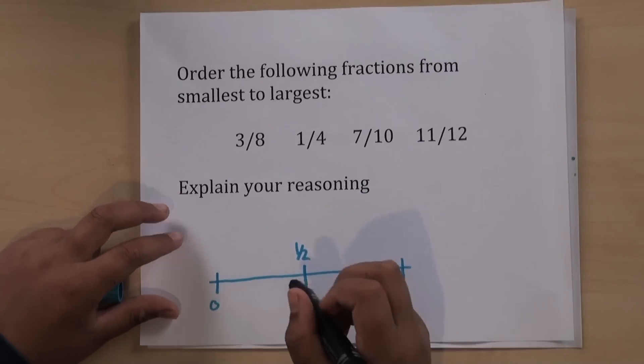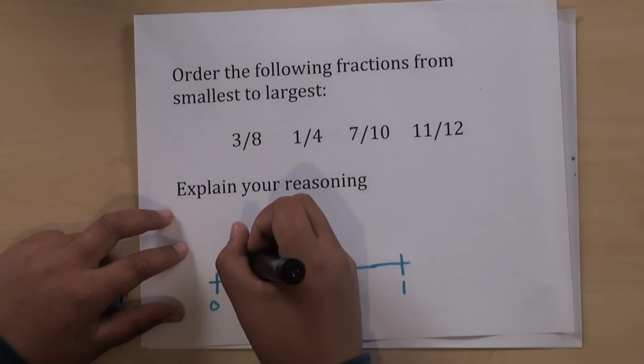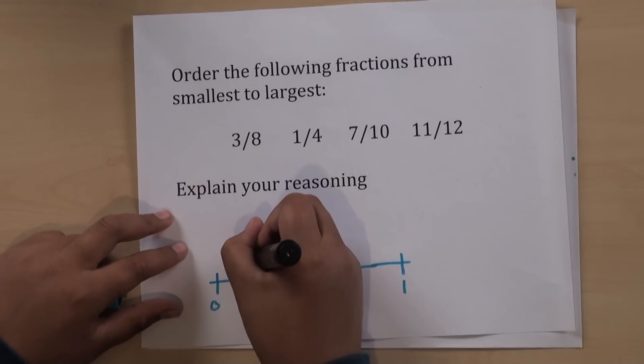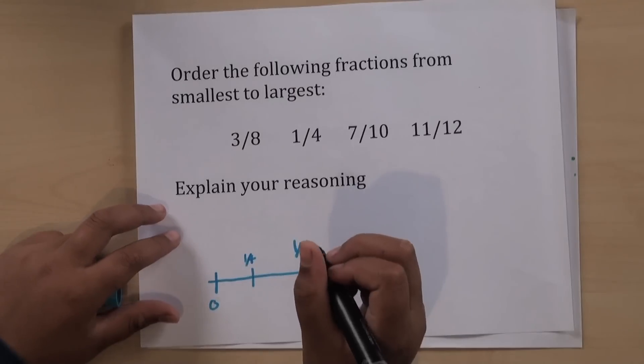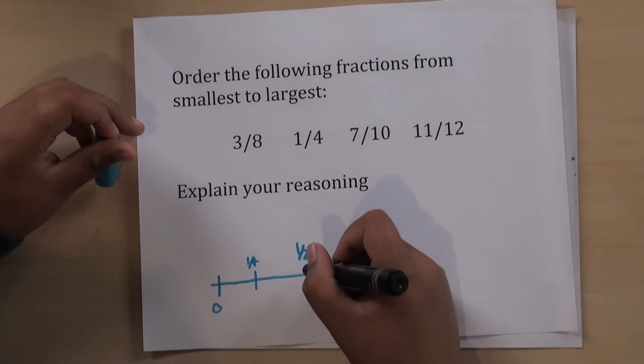So one-fourth would be here because I know that one-fourth is half of half. So one-fourth. And then three-eighths would be here because four-eighths is exactly half.